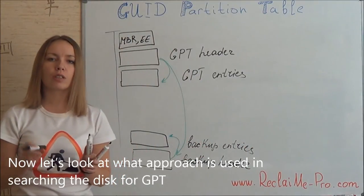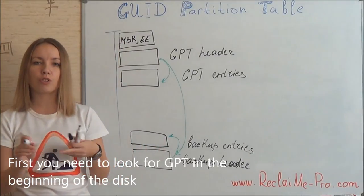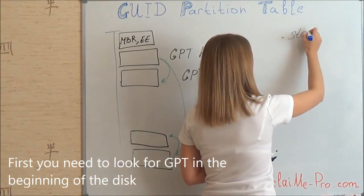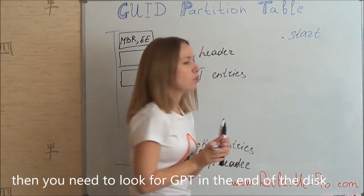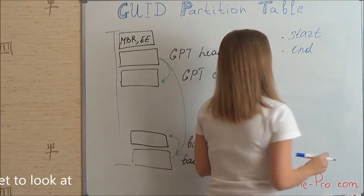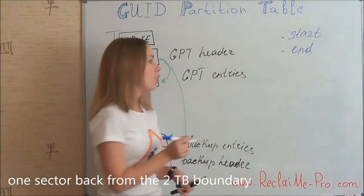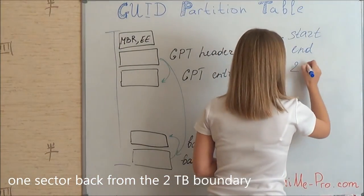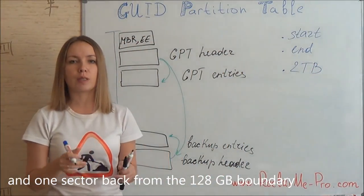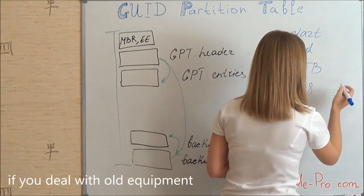Now let's look at the approach used in searching the disk for GPT. First, you need to look for GPT at the beginning of the disk. Then you need to look for GPT at the end of the disk. After that, don't forget to look one sector back from the 2TB boundary, and one sector back from the 128GB boundary if you are dealing with old equipment.